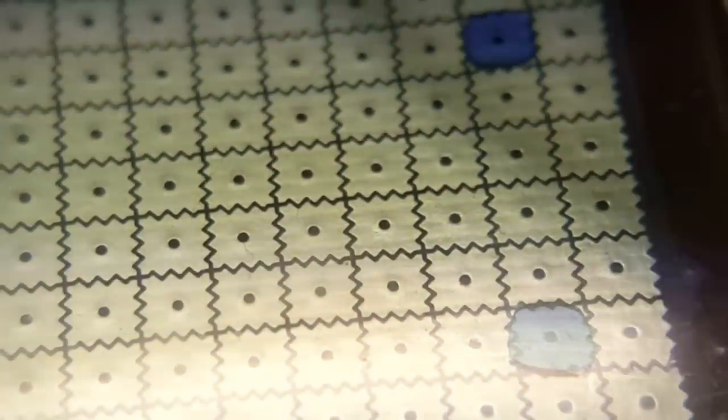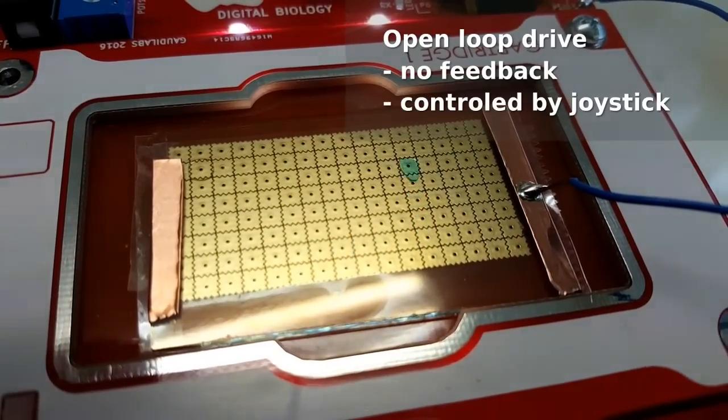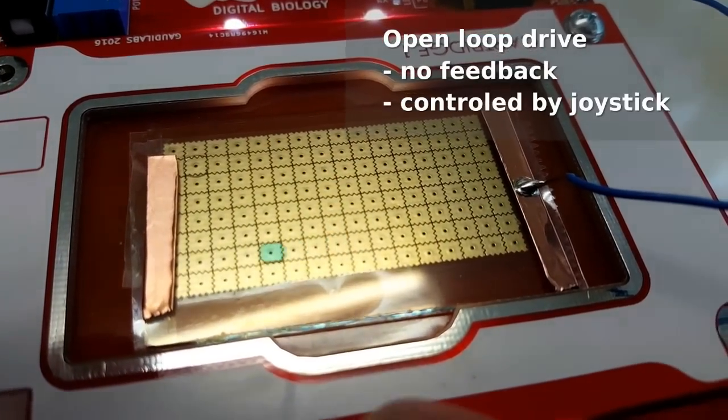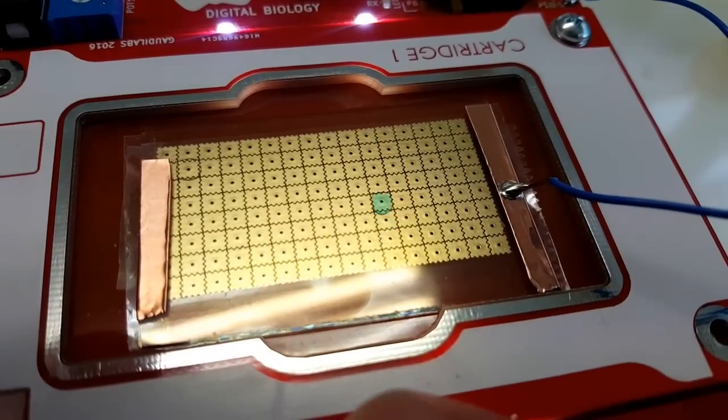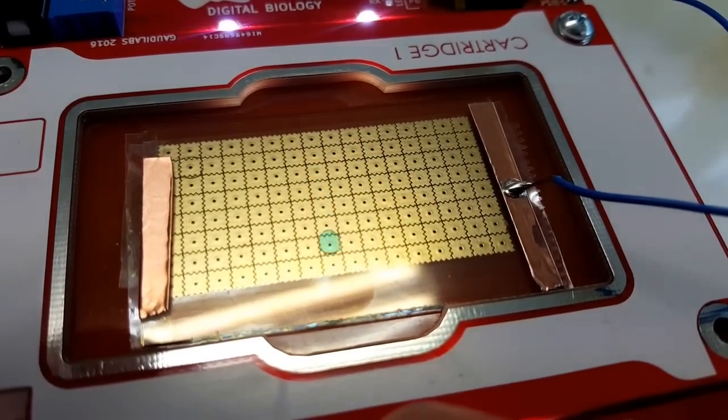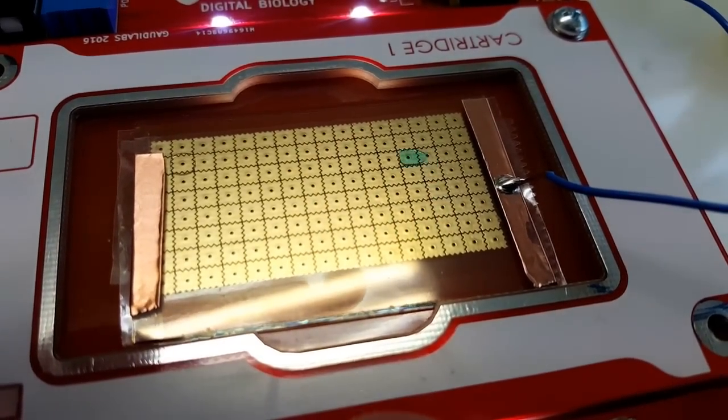With this setup we get quite good and consistent results and nice droplet movement. The video that you see now with the green droplet movement is open loop, which means the electrodes are just switched in a certain time pattern. The droplets are controlled with a joystick.